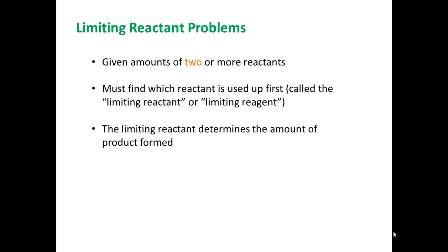In the other problems we were doing, you were given the amount of one reactant or product, and then you were asked to find how much of another substance was used or produced. Here it's a little bit different. When you are given the amount of two or more reactants, the first thing you have to do is identify which of those reactants is used up first. This is called the limiting reactant, or the limiting reagent, and that is what determines the amount of products that is formed.